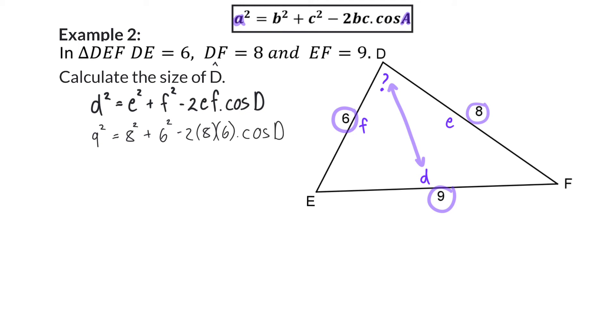Next we want to get cos D alone, but here it's important to realize that the minus 2 times 8 times 6 is multiplied to cos D, and then forms one term. Therefore, I'm going to start off subtracting the 8 squared and the 6 squared on the left, because they are two separate terms. And to get cos D completely alone on the right, I'm going to divide by the rest of that term. And now, on the right-hand side, I'm left with only cos D.